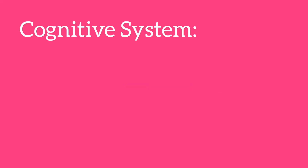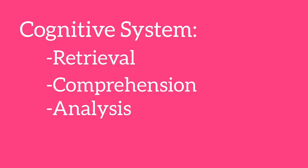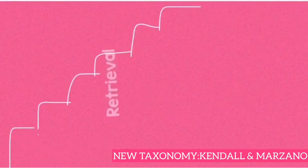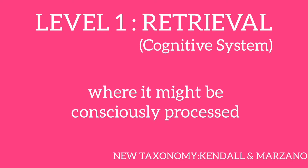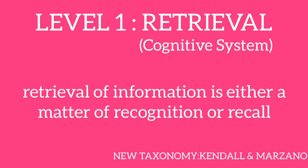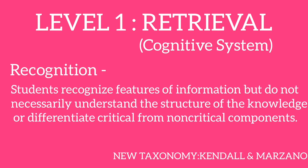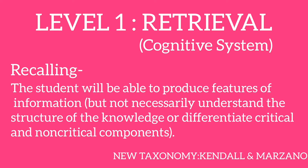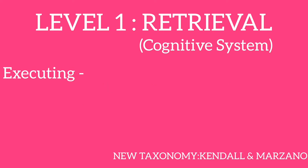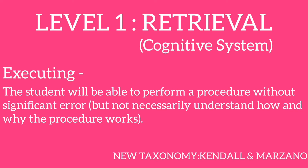The cognitive system includes processes that address retrieval, comprehension, analysis, and knowledge utilization. Retrieval is the activation and transfer of knowledge from permanent memory to working memory where it might be consciously processed. Retrieval is either a matter of recognition or recall. Recognition is when students recognize features of information but do not necessarily understand the structure of the knowledge or differentiate critical from non-critical components. Recalling is when the student will be able to produce features of information but do not necessarily understand the structure of the knowledge or differentiate critical and non-critical components. For executing, the student will be able to perform a procedure without significant error but not necessarily understand how and why the procedure works.